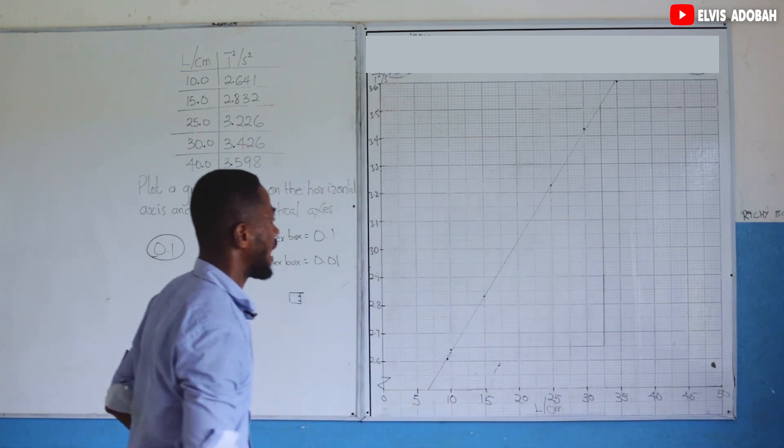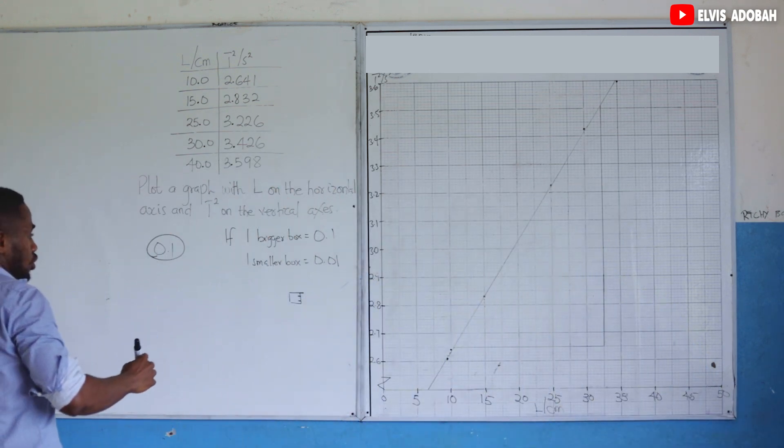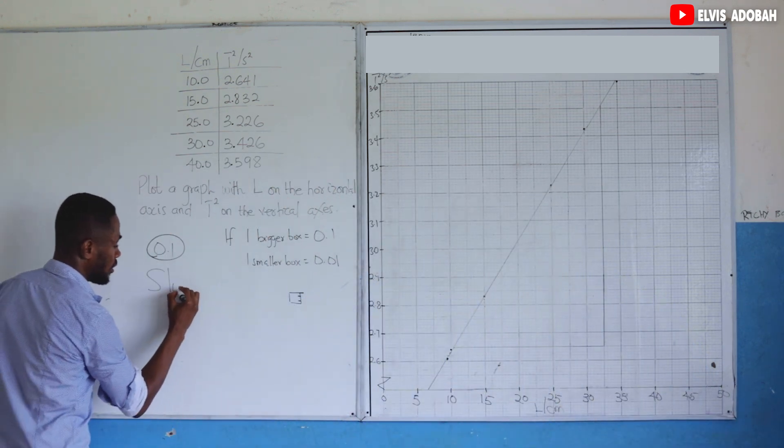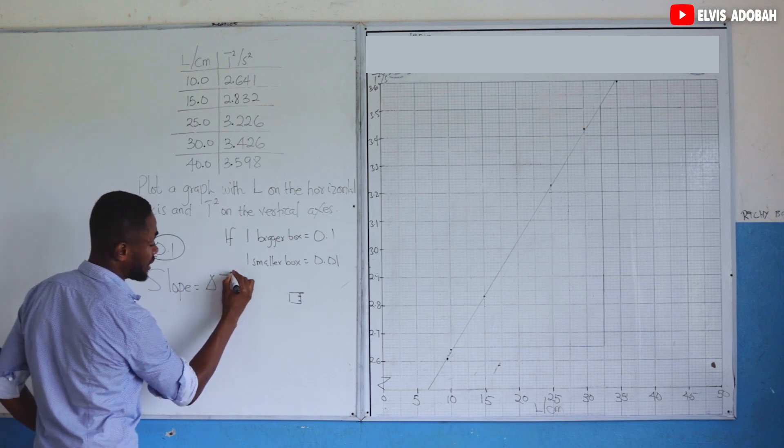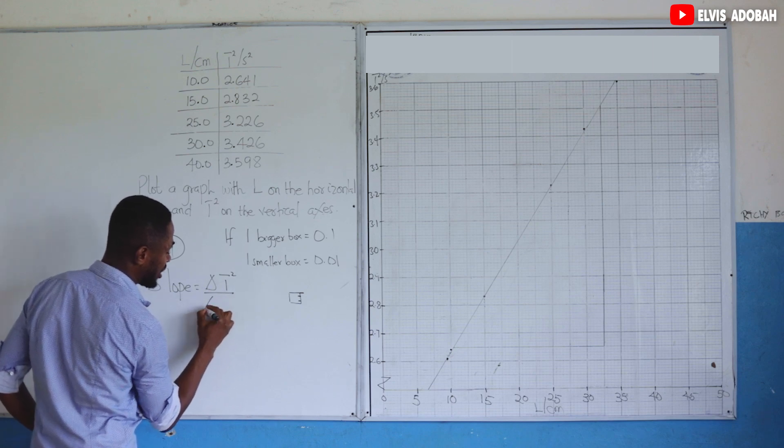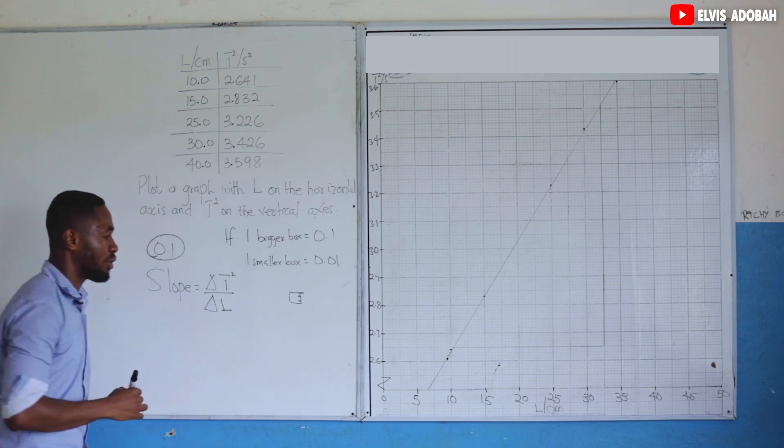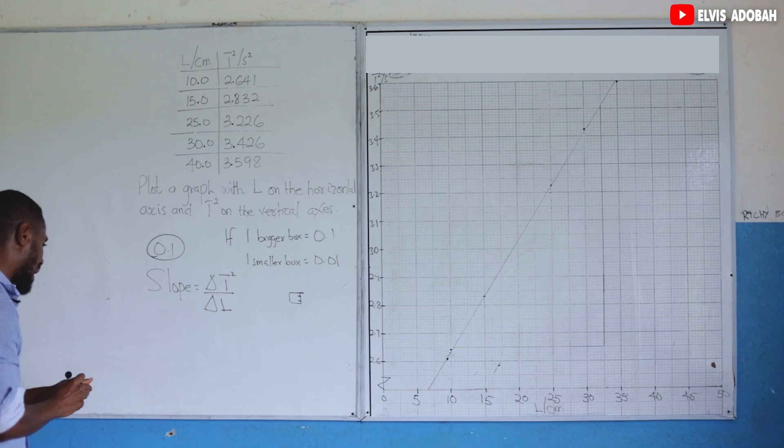This is my right angle triangle. So my slope is given as change in the vertical axis, which is T squared, divided by the change in the horizontal axis, which is capital L.